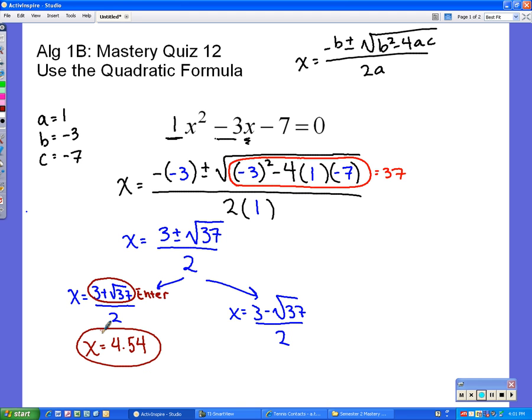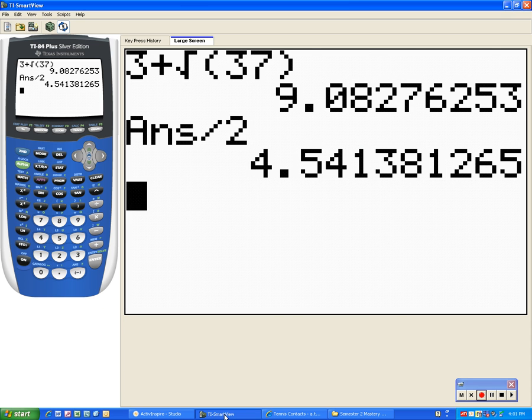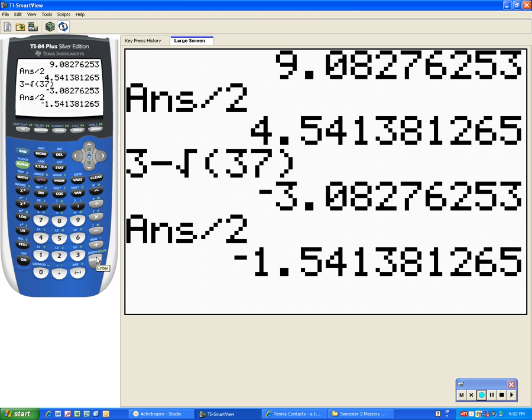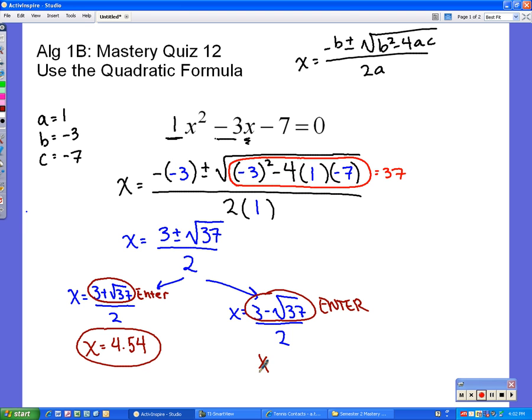Now, to get your other answer again, you type in 3 minus the square root of 37, press enter, and then type in divided by 2. So, we have 3 minus the square root of 37, enter, divide that by 2, enter. And the other answer is negative 1.54. And those are your two answers for this problem.